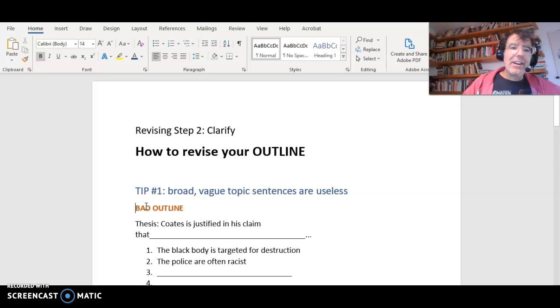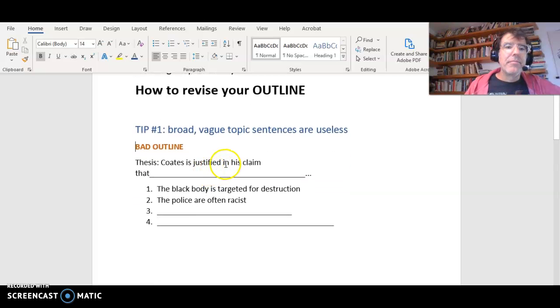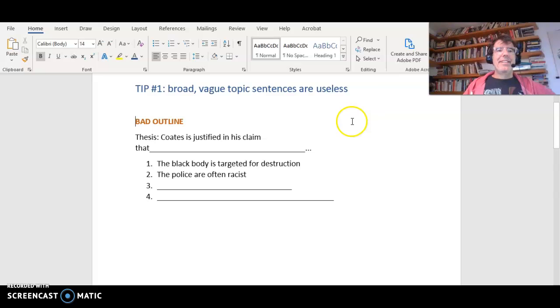This is gonna be my bad outline sample. Each body paragraph is about something very specific. So if your outline looks like this, it's not gonna work. Let's pretend we're doing topic number one about police brutality and the black body. Your thesis is: Coates is justified in his claim that...